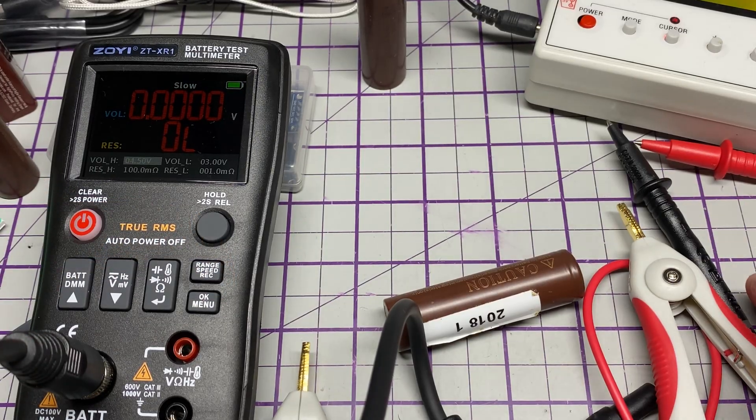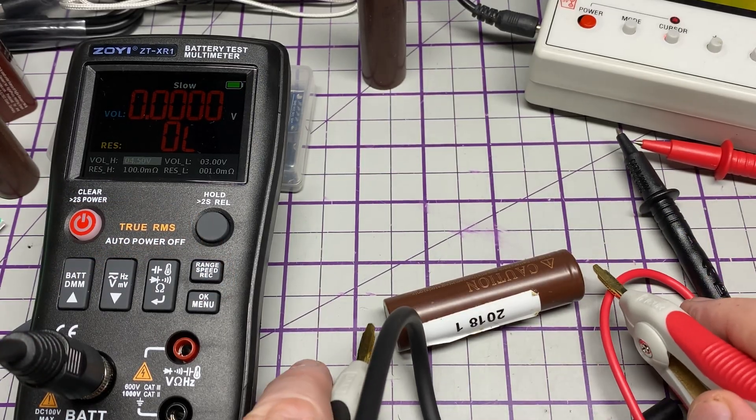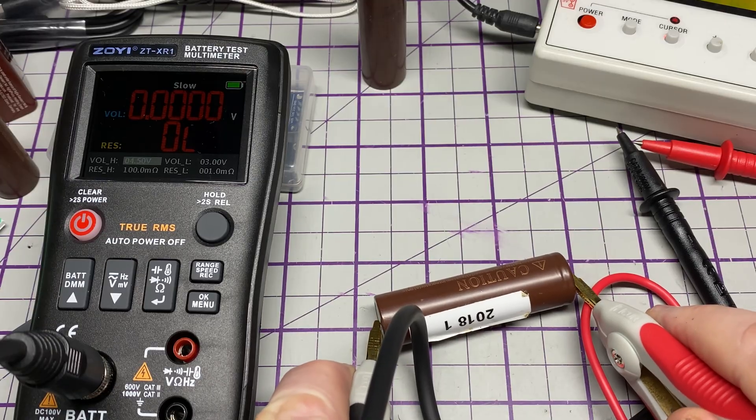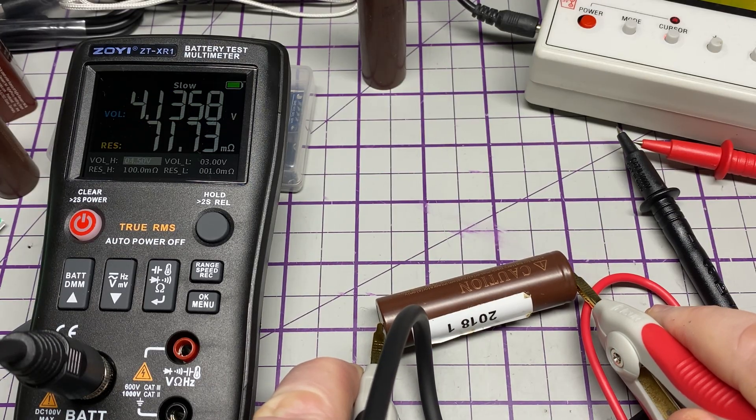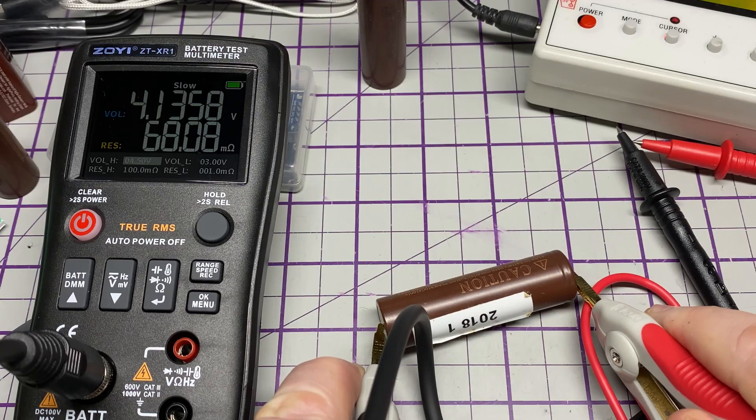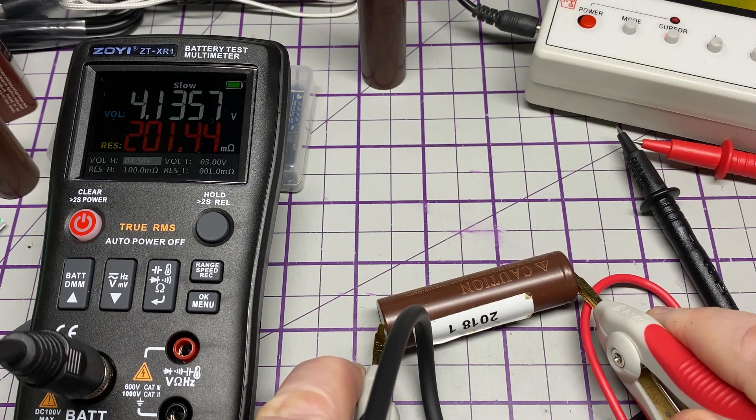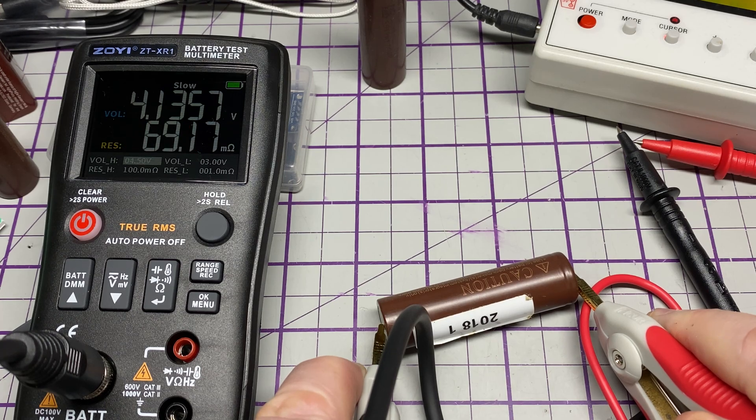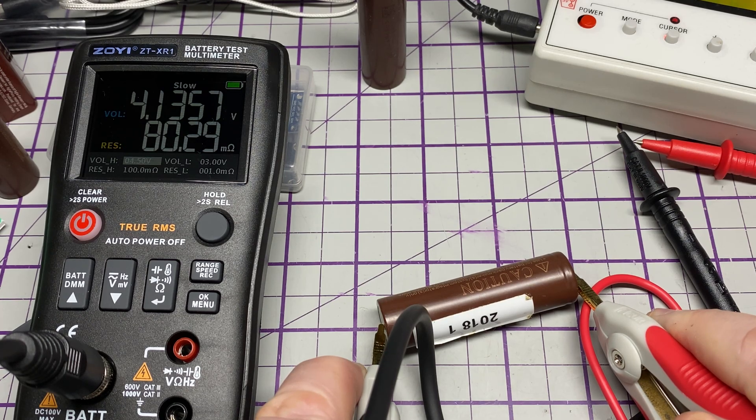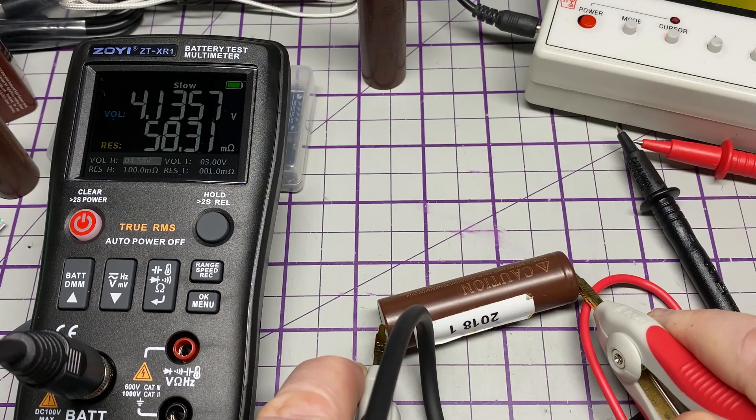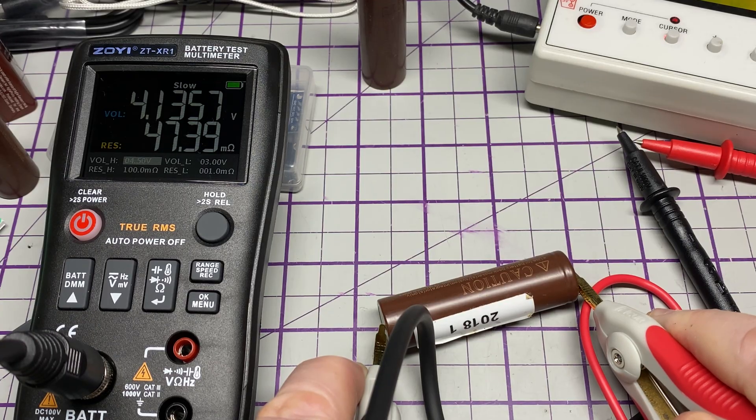There's the slow, mid, and fast settings. On the slow, obviously it's slower in reading but you may get a more accurate reading on slow. There it is. Very nice.